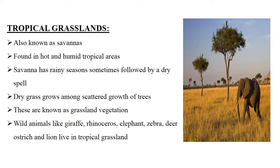Savannas are open grasslands with very few trees. There is not much rain, so the climate is mostly dry. The wild animals include some of the fastest animals on the planet. Dry grass grows among scattered growth of trees, and these are known as grassland vegetation.